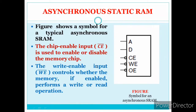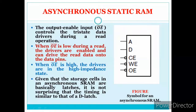The write enable input (WE bar) controls whether the memory performs a write or read operation. The output enable input controls the tri-state read buffer during the read operation. When output enable is low, the drivers are enabled and drive the read data onto the data bus. When it is high, the drivers go to a high-impedance state.